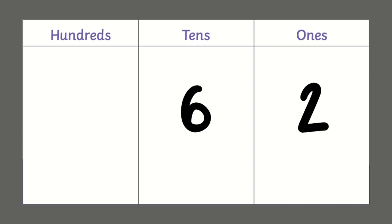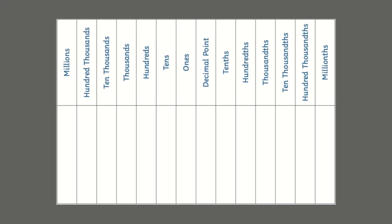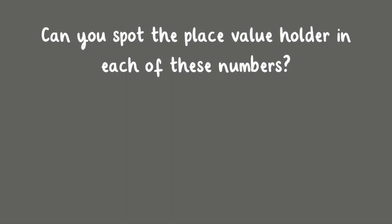The same goes for fractions of a number. Place value holders show us the difference between 0.5 and 0.05 or 0.005. The zeros tell us that the numeral 5 is worth something different in each and that these numbers are getting smaller. Can you spot the place value holder in each of these numbers?